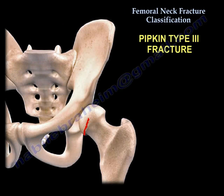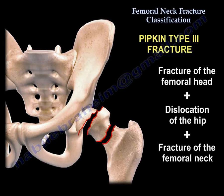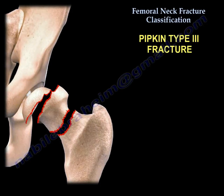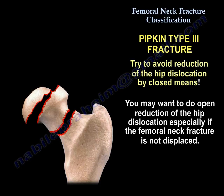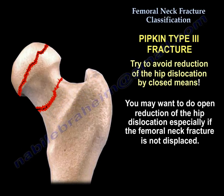Another interesting injury is the Pipkin Type 3 fracture: fracture of the femoral head plus dislocation of the hip plus fracture of the femoral neck. Try to avoid reduction of the hip dislocation by closed means. You may want to perform an open reduction of the hip dislocation, especially if the femoral neck fracture is not displaced.